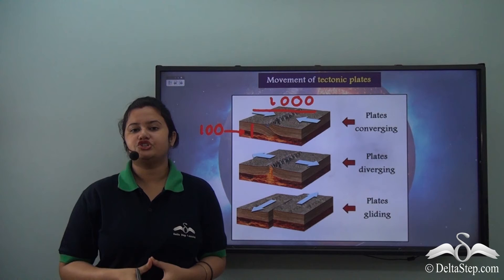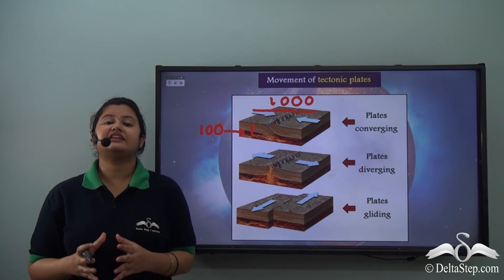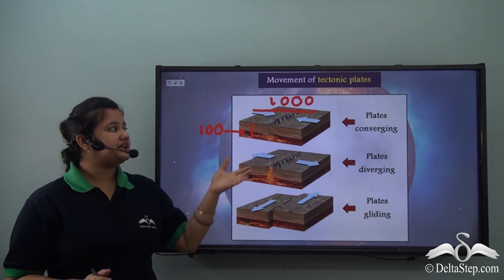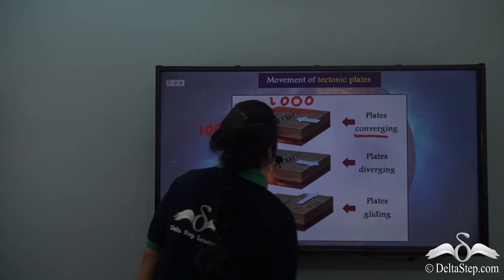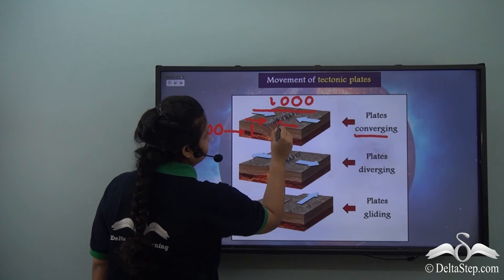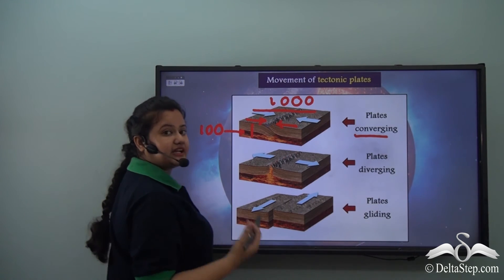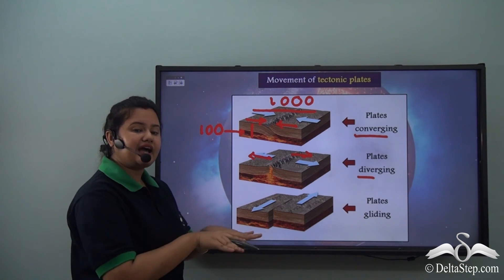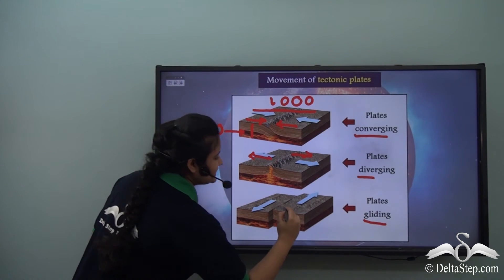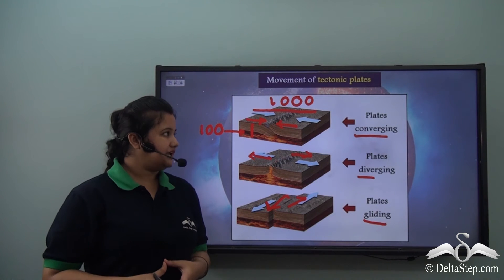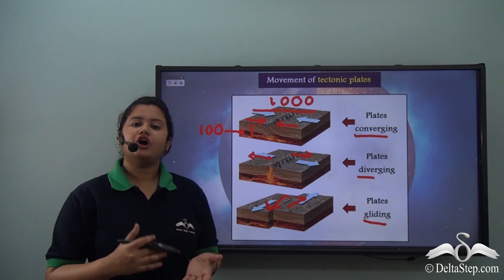The tectonic plates are not static but they move constantly, and this image shows the various movements of tectonic plates. The tectonic plates might converge — that is, they move closer together. In another case, the tectonic plates diverge — that is, they move in opposite directions from a singular point. In the third case, the plates glide past each other, just sliding alongside one another. So we find three major types of movement: converge, diverge, or slide past each other.